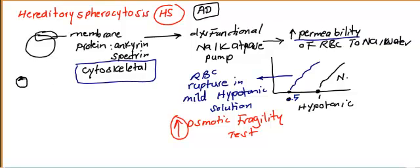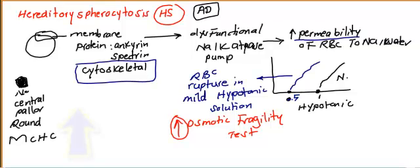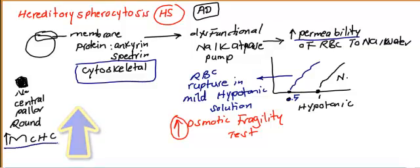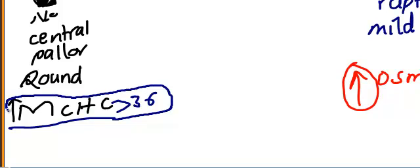In hereditary spherocytosis the cell is usually smaller with no central pallor - it is smaller and round. This characteristic of being round with no central pallor means MCHC is increased, typically more than 36. MCHC, mean corpuscular hemoglobin concentration, is increased because there is no central pallor and the hemoglobin concentration is increased in these round cells with reduced membrane surface area.